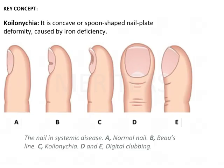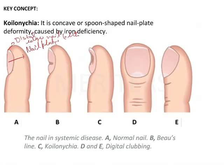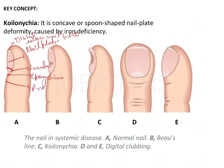Let me quickly take you through the basic normal anatomy of the nail. This is the nail plate. This is the distal edge of your nail plate. Then there will be a semicircular area here, and this particular area is known as the lunula. Here there will be a cuticle-like thing, known as the cuticle or eponychium. And then there will be a proximal nail fold.